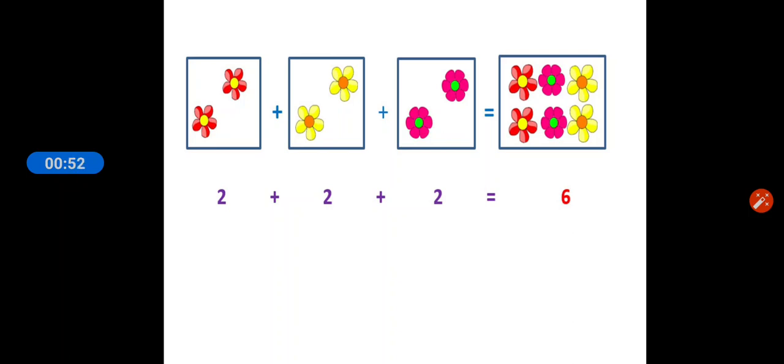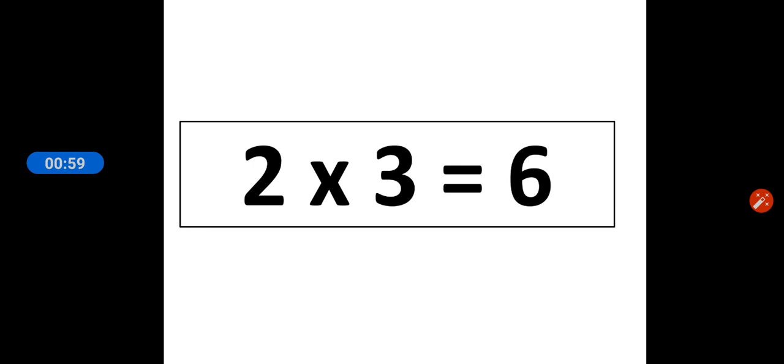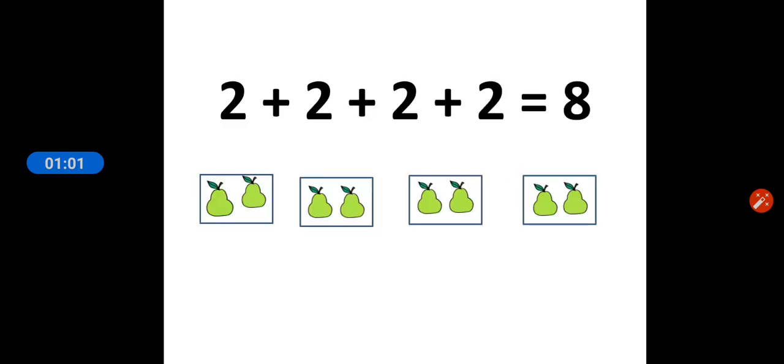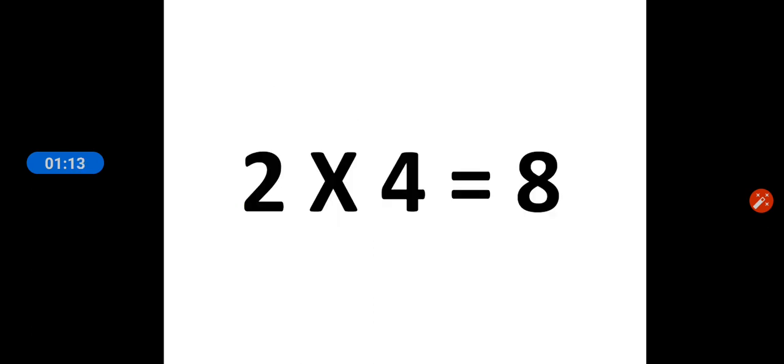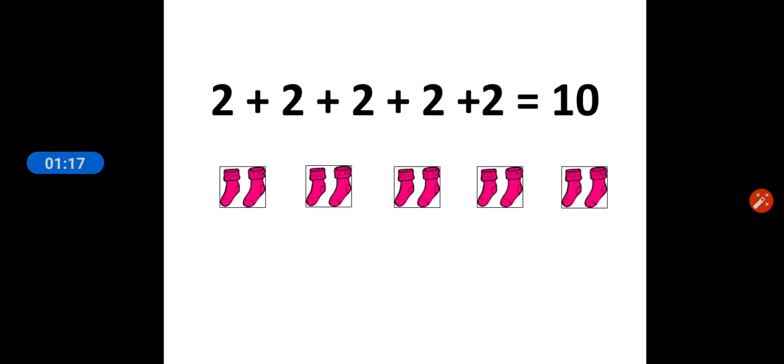When we have three groups of flowers and in each group there are two flowers, two plus two plus two is equal to six flowers. When we have to write the table of two, we will write as two threes are six. When we have four groups of two pairs, two plus two plus two plus two is equal to eight. We will write it as simply as two fours are eight.